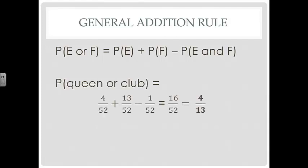The probability of drawing a queen is 4 out of 52, and the probability of drawing a club is 13 out of 52. There is one queen that is also a club, so the probability of drawing that queen of clubs is 1 out of 52 — we subtract that. Simplifying gives 16 out of 52, which reduces to 4 out of 13. This general addition rule can also be used with mutually exclusive events; you just subtract 0 because the two events cannot occur at the same time. You can always use the general addition rule in all circumstances.